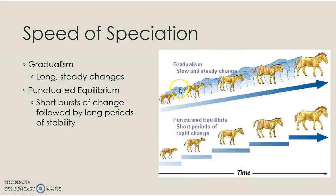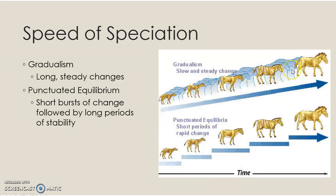With gradualism, we have all of these intermediary phenotypes in between the fossils that we find. Say we have a fossil of this horse, and this horse, and this horse — but we don't have any of the fossils of the in-between phenotypes. Gradualism says those intermediate horses existed, they just weren't fossilized, and this took a really long time with lots of intermediary phenotypes.